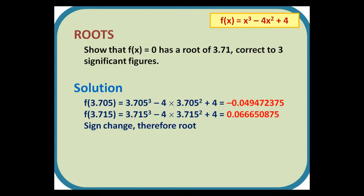f(3.705) is about minus 0.049, and f(3.715) is about 0.0666. Like before, we have a sign change, and therefore a root.